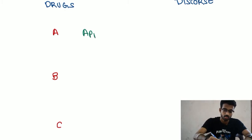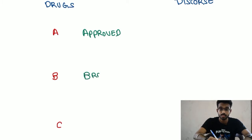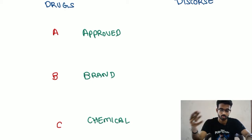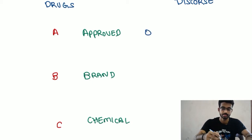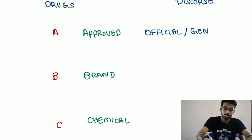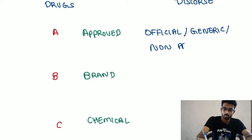A stands for Approved name. Approved drug is also called as official. It is also called as generic. It is also called as non-proprietary name.